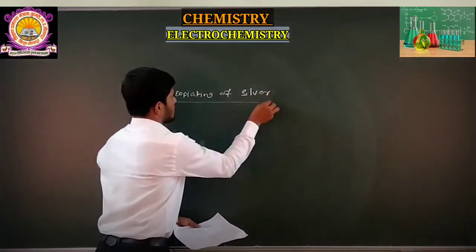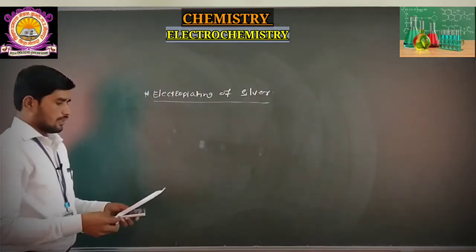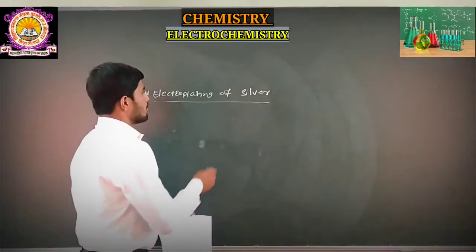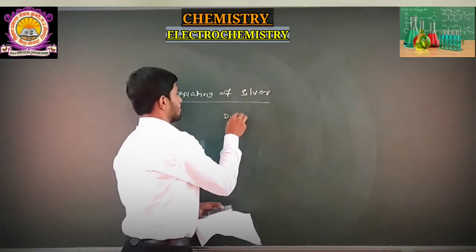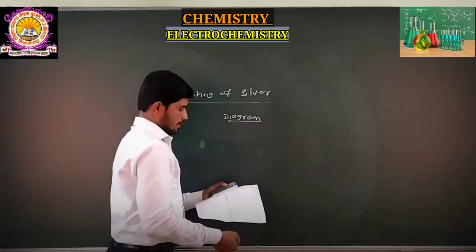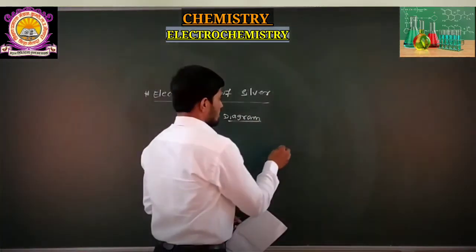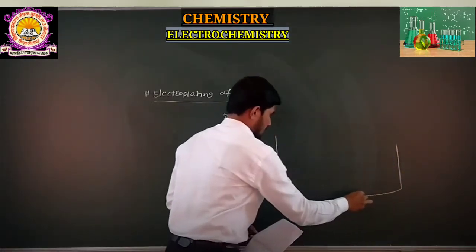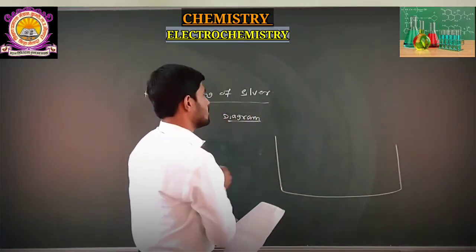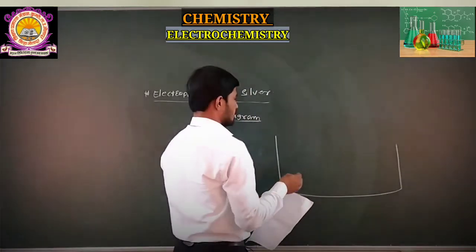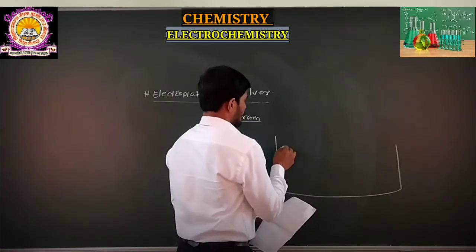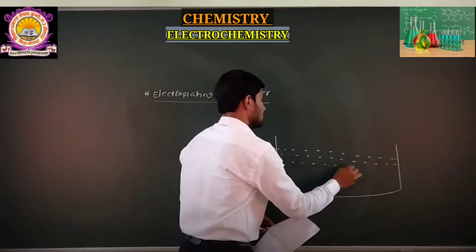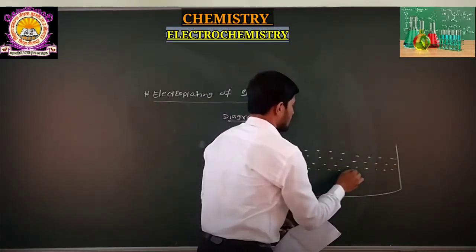Electroplating of silver will be done using a rectangular tank. We will draw a diagram. First, we take a rectangular tank in which the electroplating will be carried out. In that rectangular tank, the electrolyte is present — these dots represent the electrolyte.